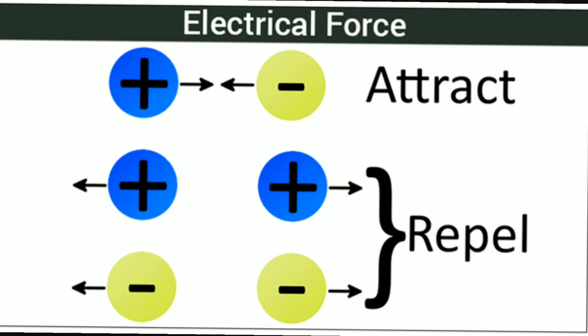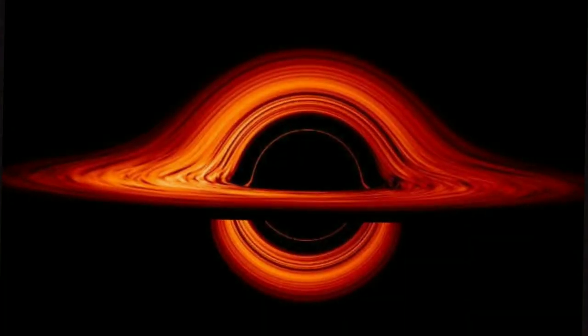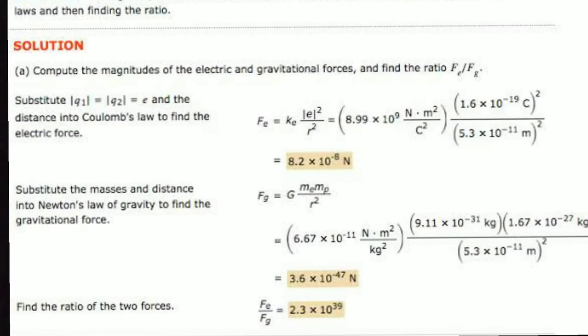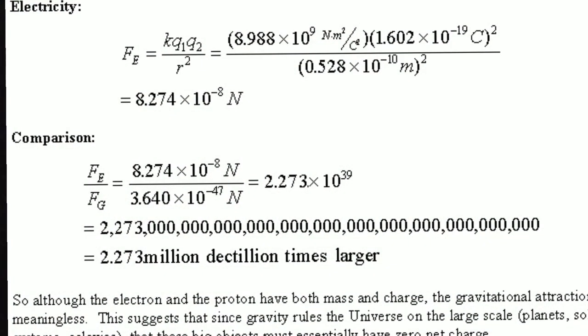Electrostatic force — positive and negative attract. That is electrostatic force. If we can see the black hole in the corner, plus and minus. The gravitational force is strong. If you look at the start, the gravitational force — 2x10 to the power 39 — is greater than electrostatic force.